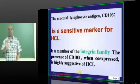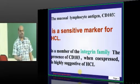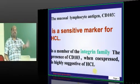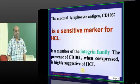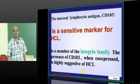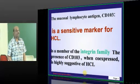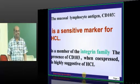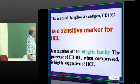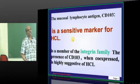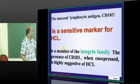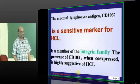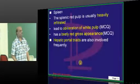There is one very important CD marker you should not forget — asked a lot in exams: CD103. It is easy to remember — think of the ambulance number 103. CD103 is a very sensitive marker of hairy cell leukemia and is a member of the integrin family. It is highly suggestive of hairy cell leukemia if positive.